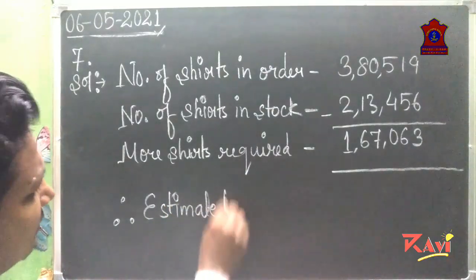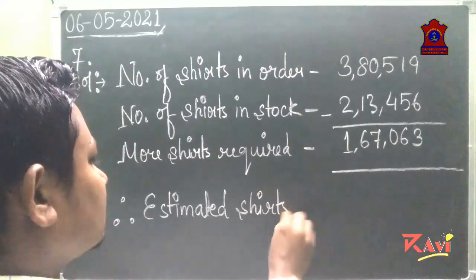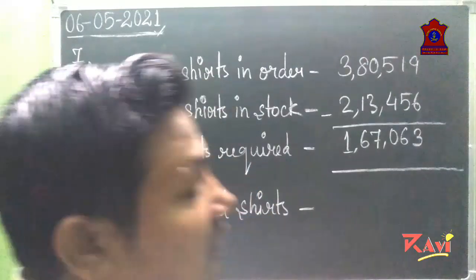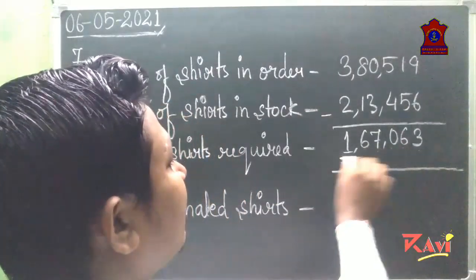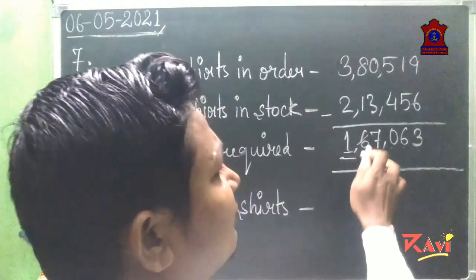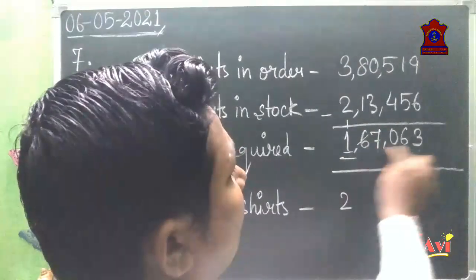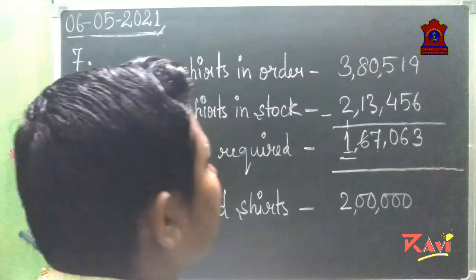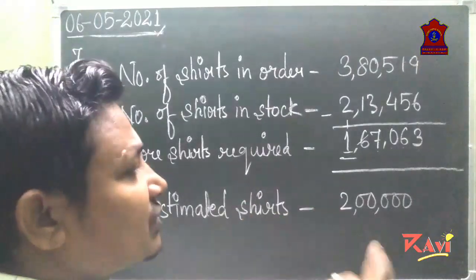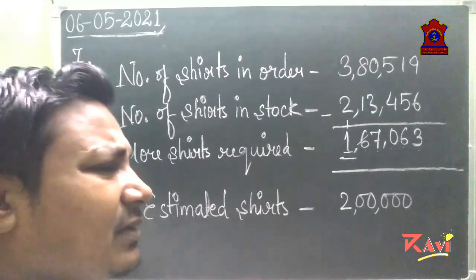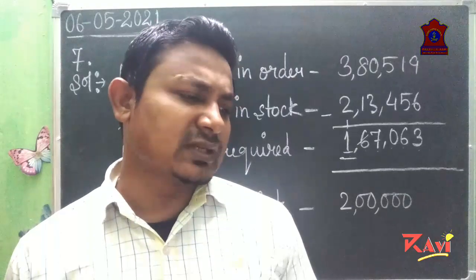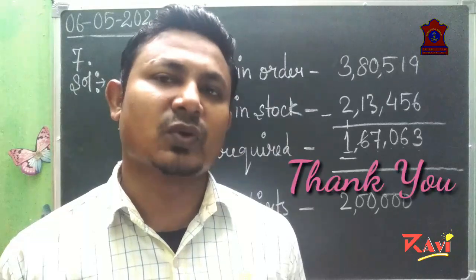Therefore, the estimated shirts required equals 1,67,063 rounded to the nearest lakh. At the lakhs place we have 1, and before that we have 6. Six is more than five, so one will be added: 1 plus 1 is 2, and all remaining digits become zero. So the estimated shirts required is 2 lakh. We have done up to question seven today; the remaining three questions will be discussed in the next online class tomorrow. Thank you.